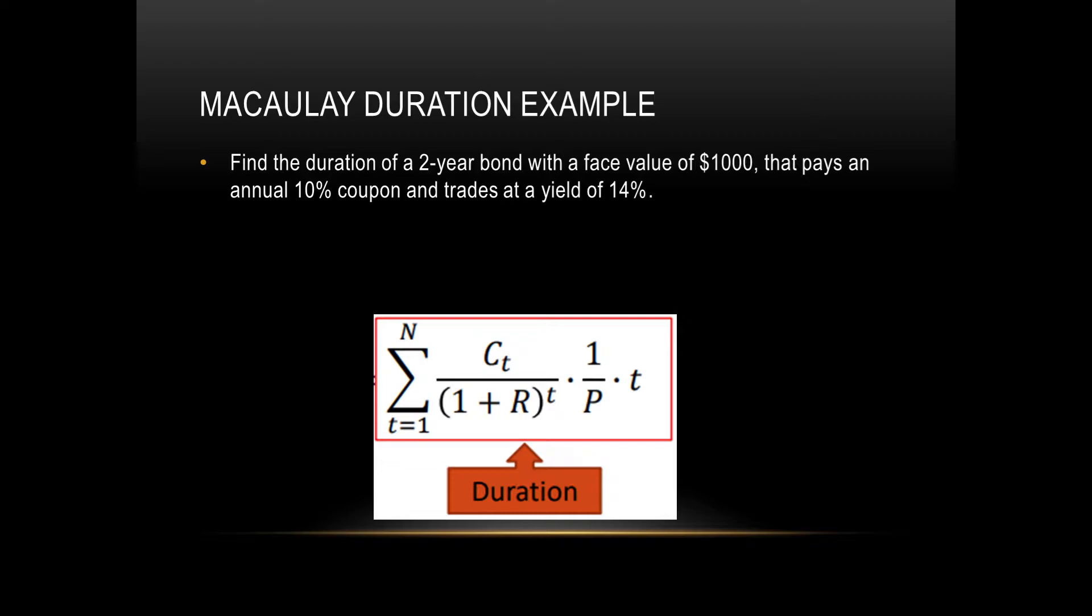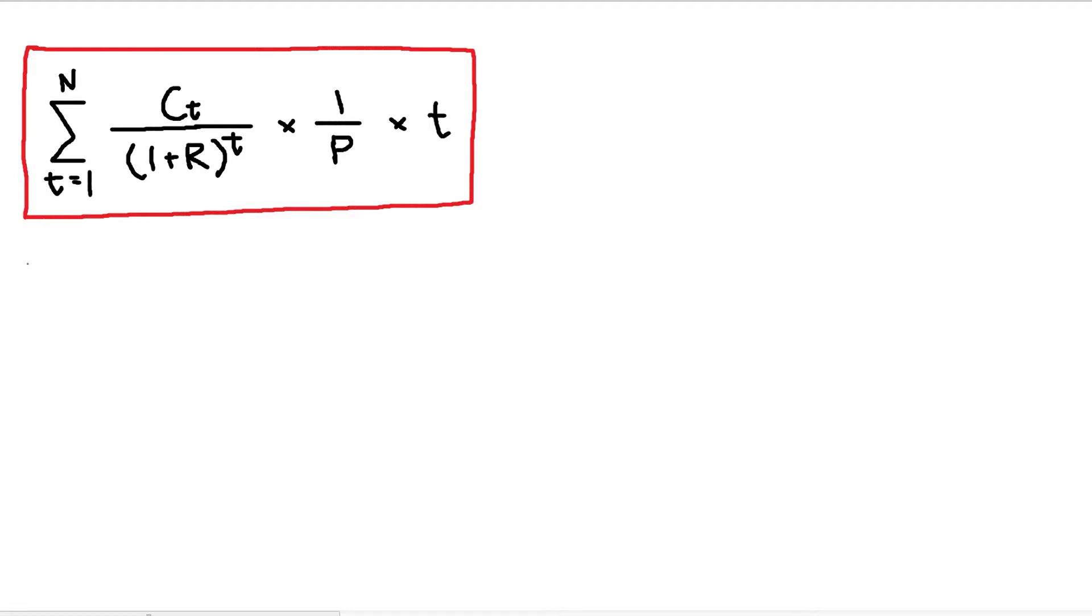Let's do our first example. Here we need to find the duration of a two-year bond with face value $1000 that pays an annual 10% coupon and trades at a yield of 14%. First of all, let's write down what information we have. N equals 2 years, face value is $1000, coupon rate is 10%, so coupon payment C is $100, and the yield or interest rate R is 14%.